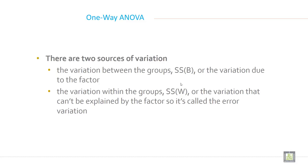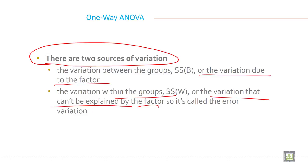We have seen three types of variation in the table. What are the sources of variation? What are the reasons that the data varies? There's the variation between the groups, SS(B), or the variation due to the factor, and the variation within the groups, SS(W), or the variation that cannot be explained by the factor. This is called error variation.